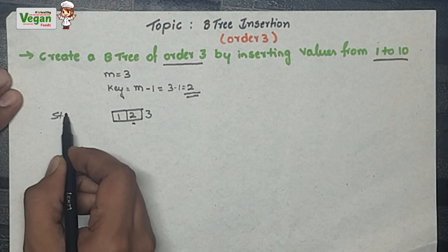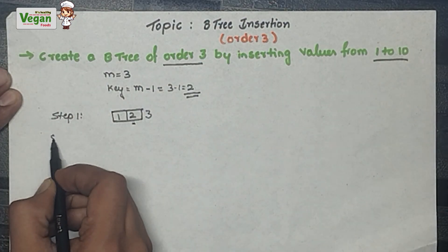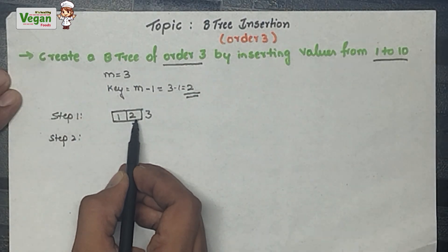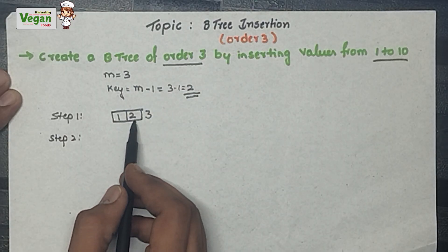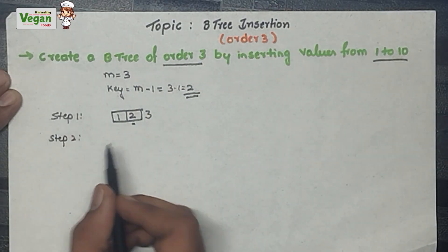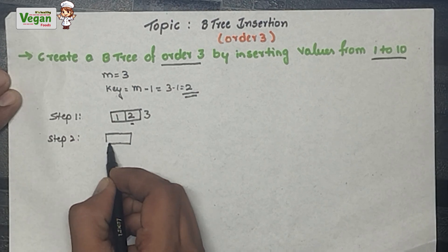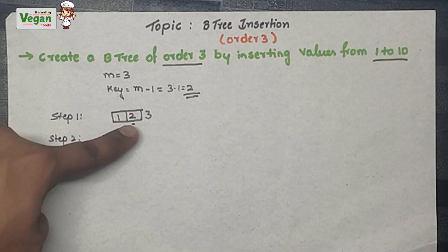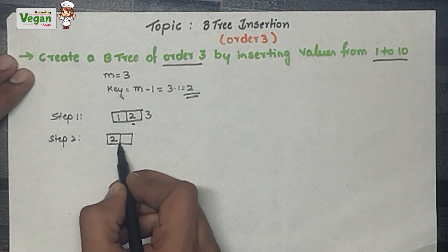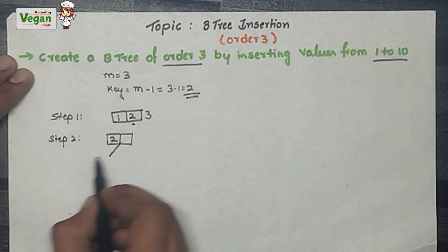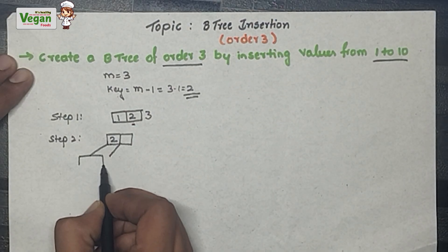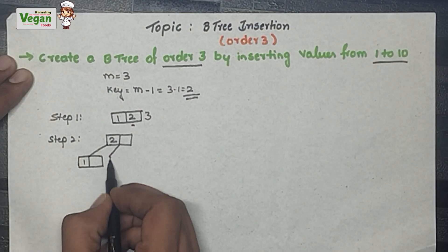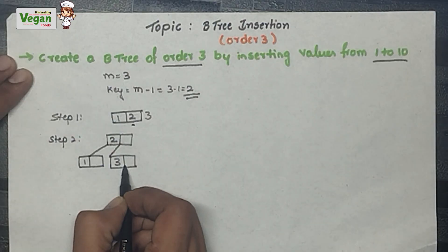In step 2, we shift the median element 2 one level upward. Since we are shifting only 2 upside, 1 and 3 will remain at the same level. So 1 will come on the left and 3 on the right — 3 is greater than 2 so it goes to the right side.